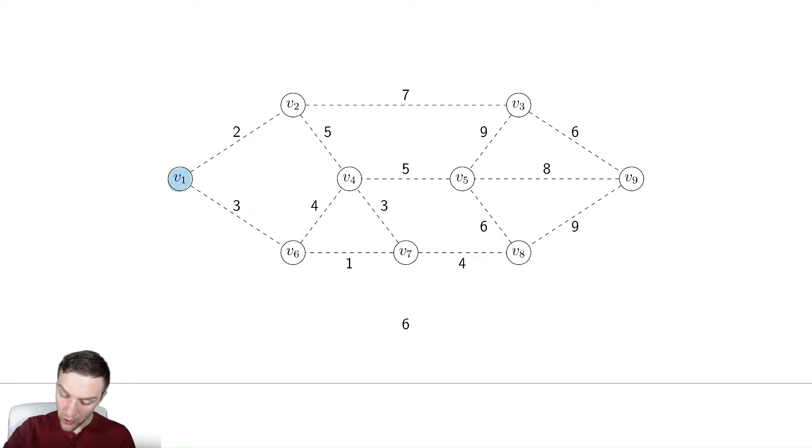After starting with v1, what we're going to do is find the minimum weight edge connecting v1 to something not in the colored set. There are two options, two and three. The smallest edge is two, so we add that to the minimum spanning tree, and then we add v2 to the spanning tree.